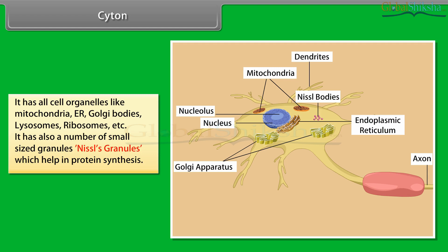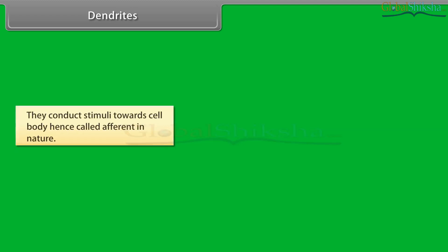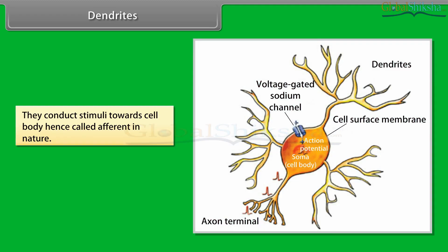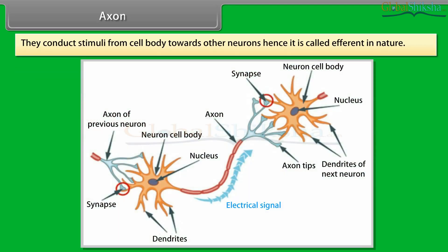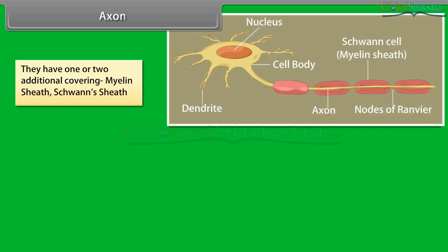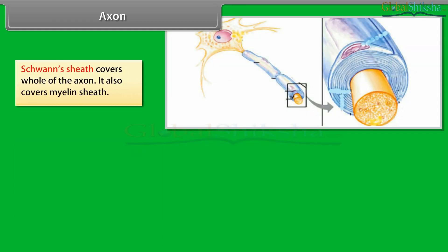The cytone also has a number of small-sized granules called Nissl's granules, which help in protein synthesis. Dendrites are small-sized branched fibres, many in number; they conduct stimuli towards the cell body, hence called afferent in nature. The axon is the longest cell in the body, long-sized and unbranched, only one in number. It conducts stimuli from the cell body towards other neurons, hence called efferent in nature. It has one or two additional coverings: the myelin sheath and the Schwann sheath.